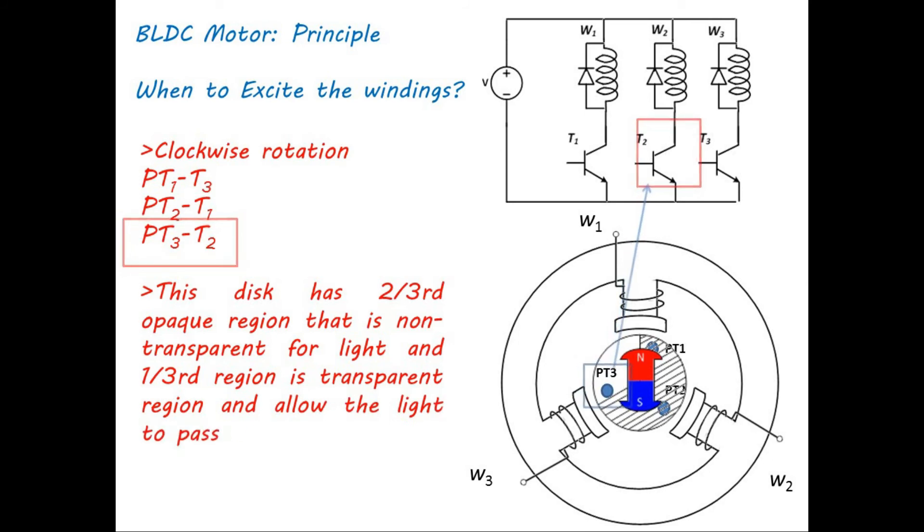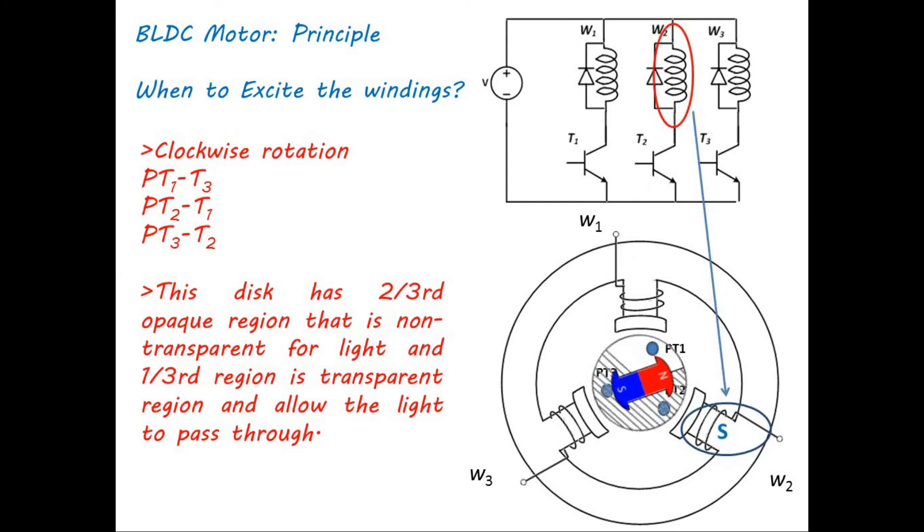In the present situation, only PT3 encounters transparent region and as a result, PT3 turns on and makes transistor T2 on. As a result, winding W2 is excited and rotor rotates for 120 degrees in clockwise direction.